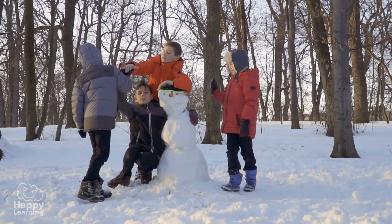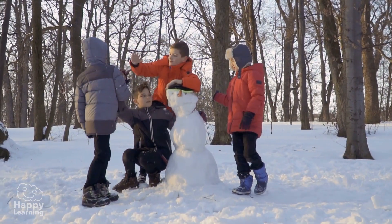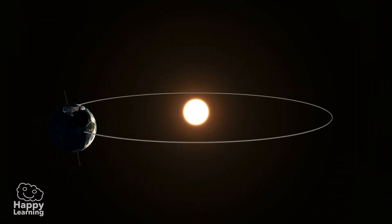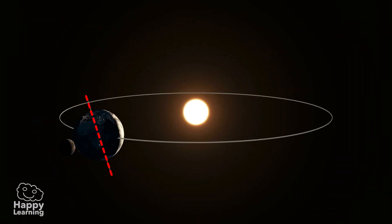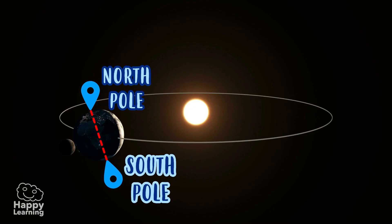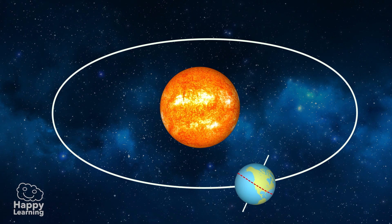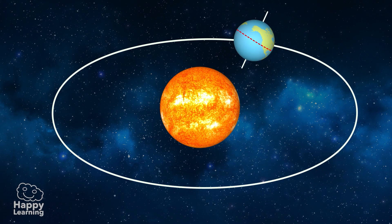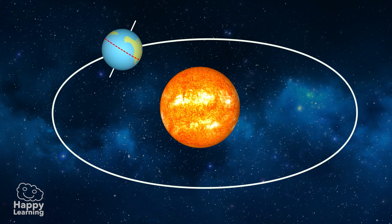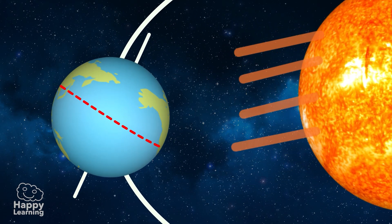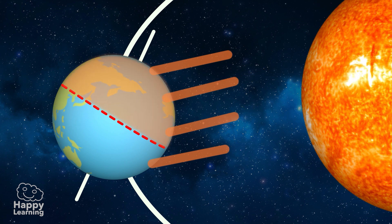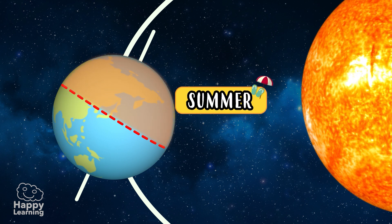Do you know why this is the case? It's very easy — check this out. If we observe the Earth, we realize that its axis, the imaginary vertical line that crosses from pole to pole, is not straight — it's tilted. That means that when the Earth revolves around the sun, there is a part that is closer to it and warmer, and that's why it's summer there — in this case, the northern hemisphere.